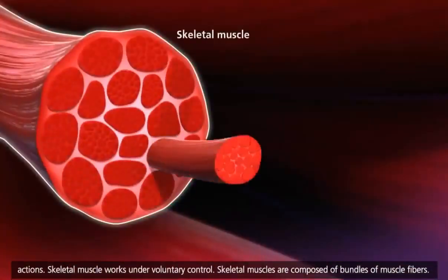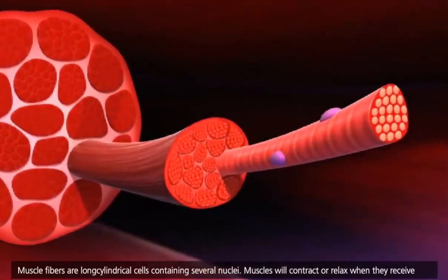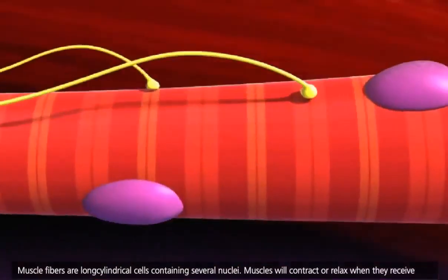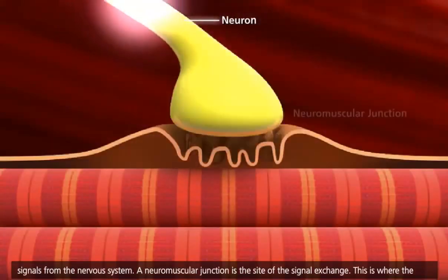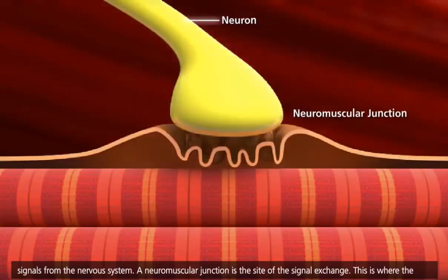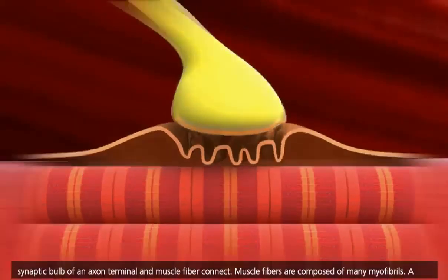Skeletal muscles are composed of bundles of muscle fibers. Muscle fibers are long cylindrical cells containing several nuclei. Muscles will contract or relax when they receive signals from the nervous system. A neuromuscular junction is the site of the signal exchange — this is where the synaptic bulb of an axon terminal and muscle fiber connect.